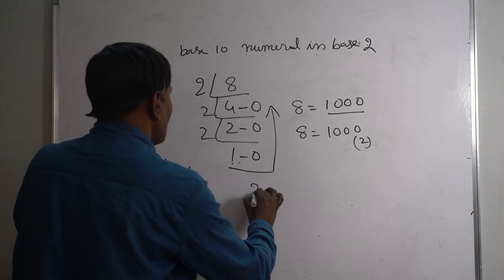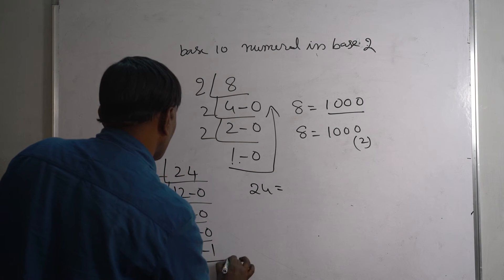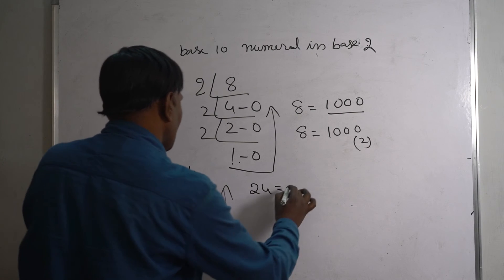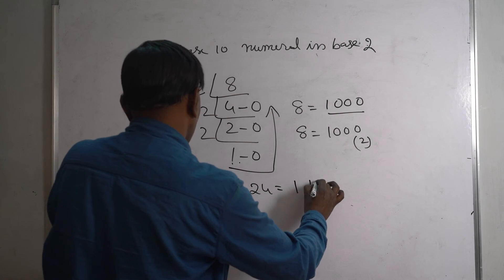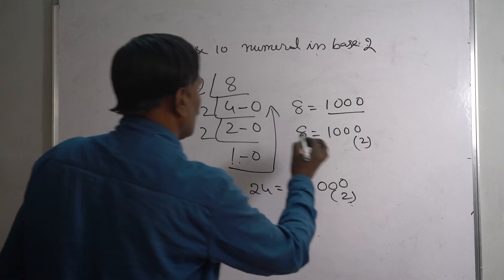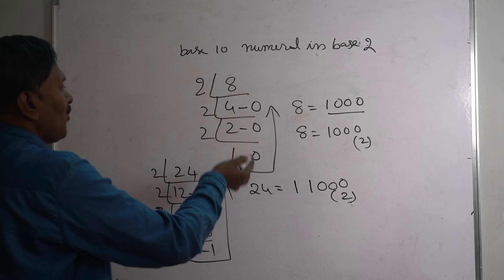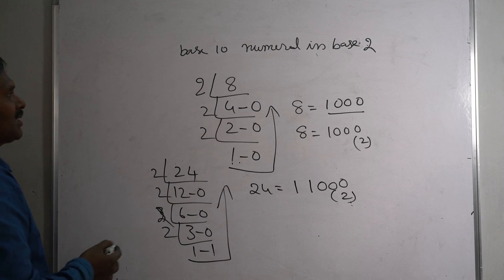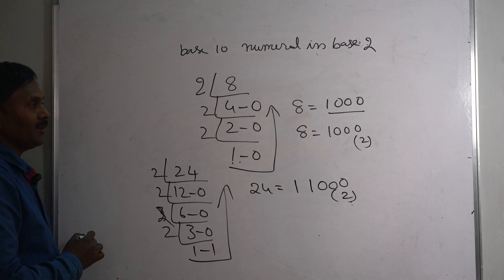So 24 is equal to, take from this direction: 1, 1, 0, 0, 0. So if you follow this method, you can solve such type of problems in this manner. Thank you very much.